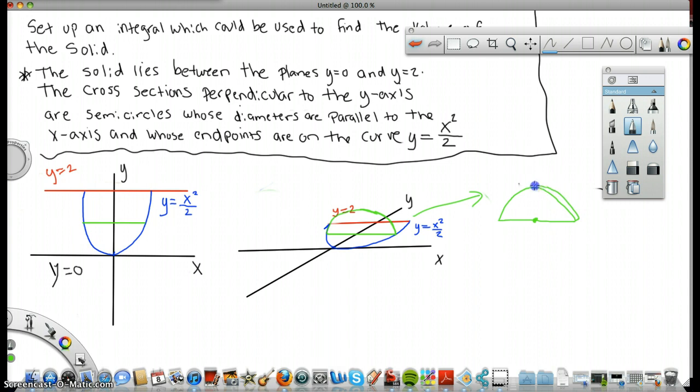And the reason you might do that is because it might lead you to anticipate what the direction of integration should be. Should it be dy or dx? So how do I get the area of this semicircle? Well, I need to know the radius. Look at our picture here. There's our diameter. Our radius is this line here. So how can we describe that?